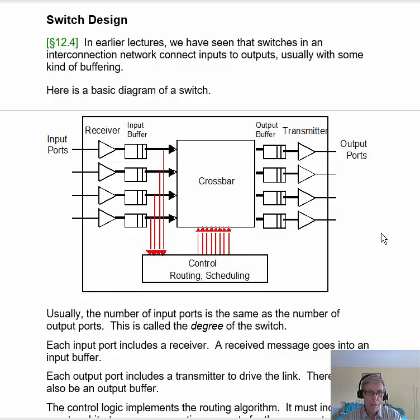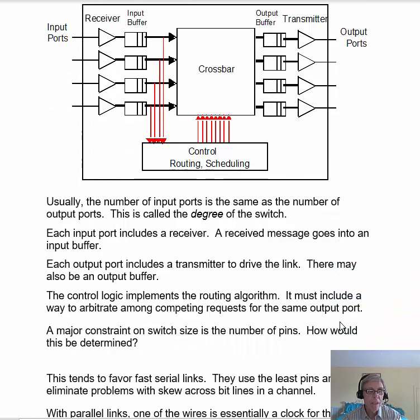And then you have the output ports that send the message on. Usually, the number of input ports equals the number of output ports, and that's called the degree of the switch. The control logic implements the routing algorithm. It needs to include a way to arbitrate among competing requests. If different requests come in that are destined to the same output port, the control logic needs to determine which ones go first.